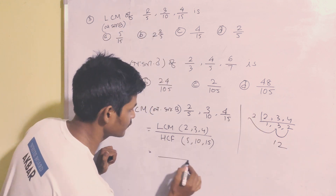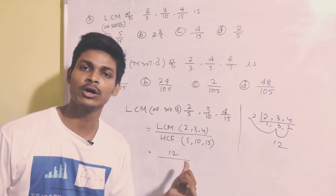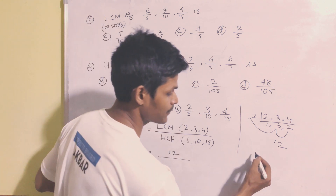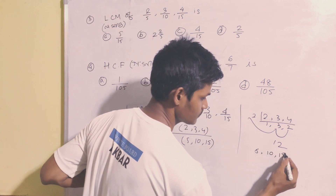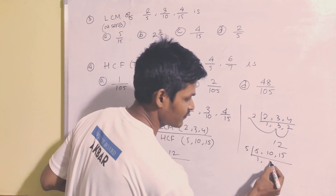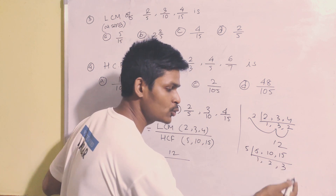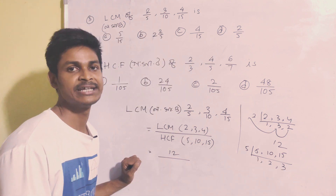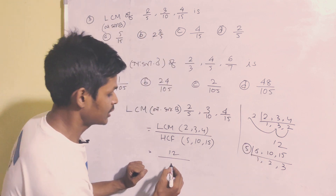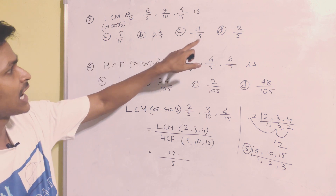For example, LCM of 2, 3, 4 is 12. Next, LCM of 5, 10, 15: all three are divisible by 5, giving 1, 2, 3. So LCM is 5 times 1, 5 times 2, 5 times 3.